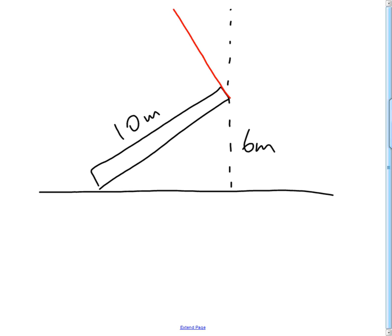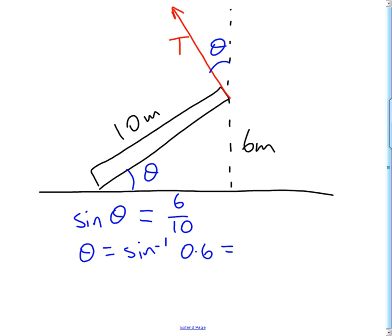We're trying to work out the horizontal component of our tension. In order to do that, we need to know this angle theta. Take a moment to convince yourself of this, but that angle theta is actually the same as this angle theta here. For the lower theta, we have the opposite and the hypotenuse, so we're going to use sine. Sine theta is going to be 6 over 10. Therefore theta is going to be the inverse sine of 0.6, which is 36.9 degrees.